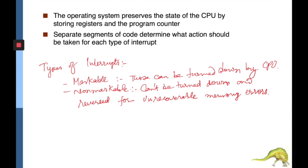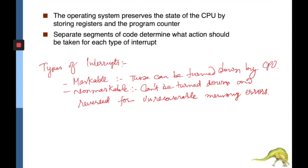Whenever an interrupt is encountered, the operating system preserves the state of the current CPU or user process by storing the registers and program counter — this is a kind of context switching, which we will discuss later. There are separate segments of code that determine what action should be taken for each type of interrupt, based on mapping, and each interrupt service routine has certain steps to determine what action to perform.